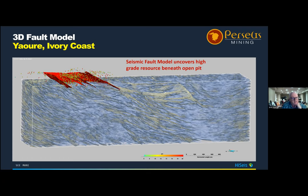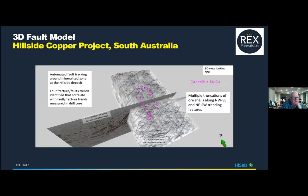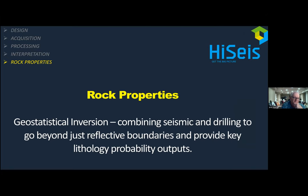We've done this work in Australia and also in West Africa — a 3D for Perseus in Côte d'Ivoire. Results there highlighted what's going on and how those resources can be seen at depth. At Hillside, the same processes applied to the same 3D volumes show a nice correlation between copper shells and truncations of the seismic fault features.